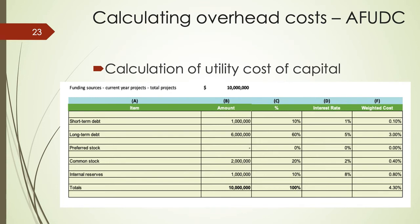In column F, you take the amount in column C times column D to get the weighted cost of capital for each financing option. For short-term debt: 10% times 1% equals 0.1%. For long-term debt: 3%. For common stock: 20% times 2% equals 0.4%. For internal reserves: 10% times 8% equals 0.8%. Adding those up gives 4.3%, meaning our total cost of capital structure for the utility is 4.3%.